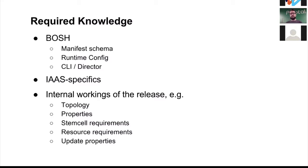Last but certainly not least, the most important thing: the BOSH release you're deploying is a tarball, but you can't just deploy it without knowing what's in there. You have to know the inner workings — for example, there's a scope app and a bunch of agents that send reports to that app, so that topology is not transparent to you. You have to configure the agent to find the app to send reports to.